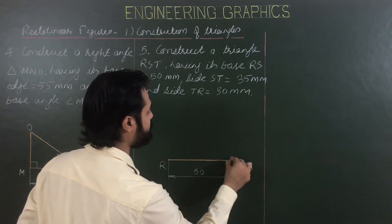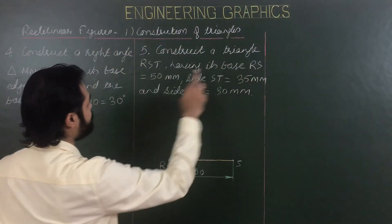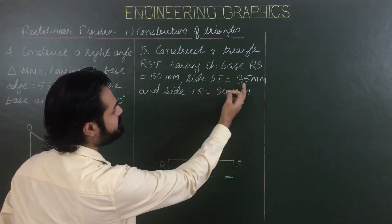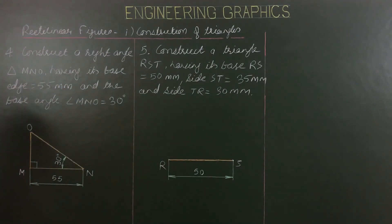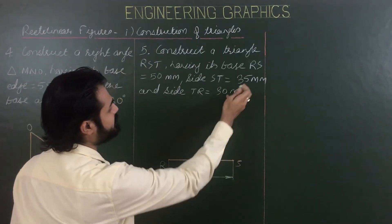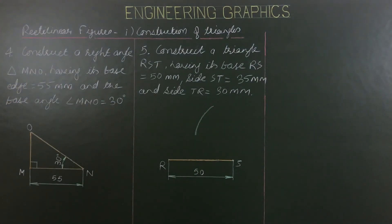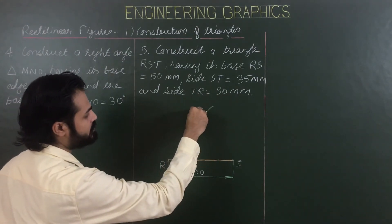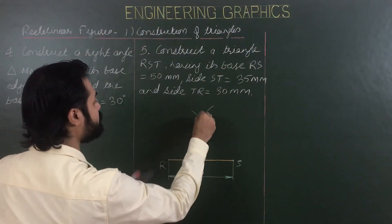Write 50 mm. R is the first corner and S is the second vertex. RS is 50 mm. Now for side ST from S to T: set 35 mm as the radius and with S as center draw an arc. Then from R as center with radius 30 mm — since TR equals 30 mm — draw another arc. The common intersection point of the two arcs is the third point T. Join T to R and to S.